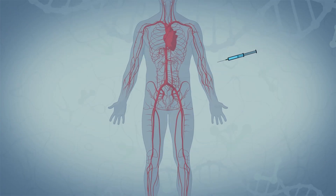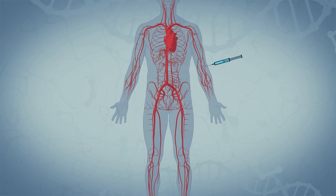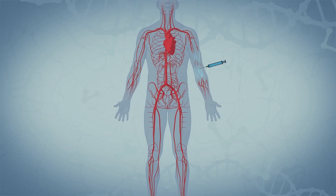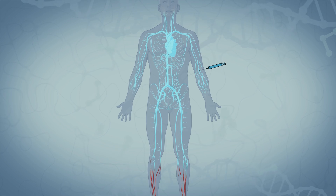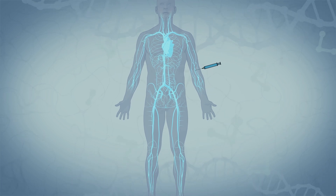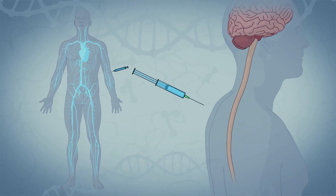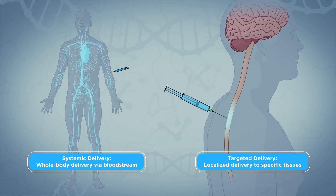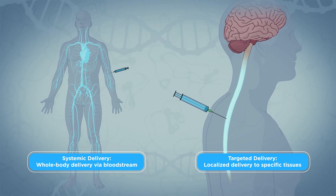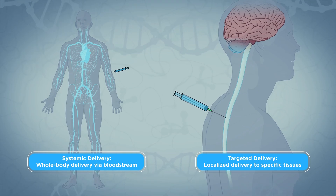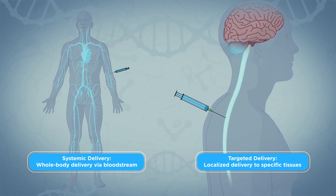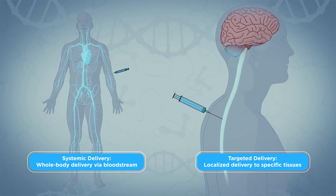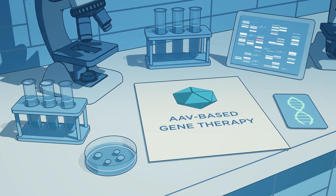AAV gene therapy may be given to a person systemically — that is, to their whole body via the bloodstream — or, more locally, through a more targeted delivery route. The decision of how to best deliver gene therapy is multifaceted and includes considerations such as where the working gene is needed by the cells of the body, how to best get the working gene to those cells, and how to best mitigate any potential immune response to the AAV particles.